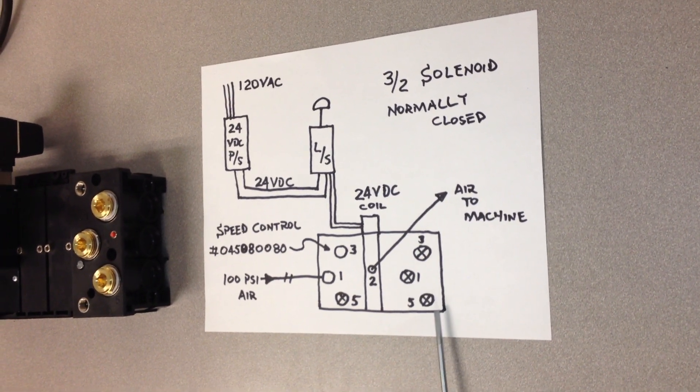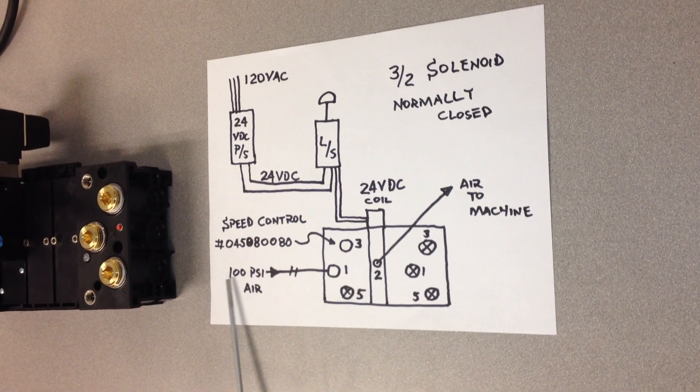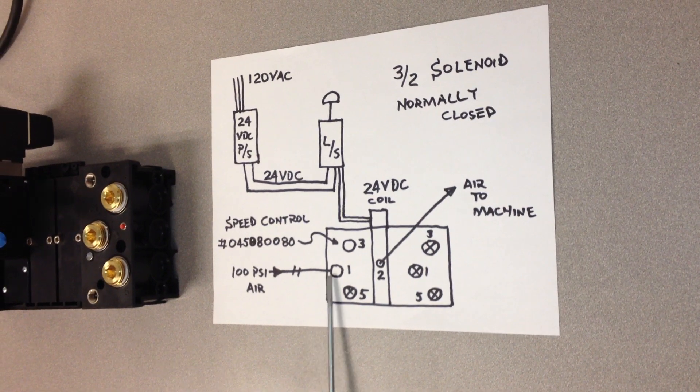On the left-hand side of the solenoid, on port one, we have our plant instrument air connected, 100 psi air.